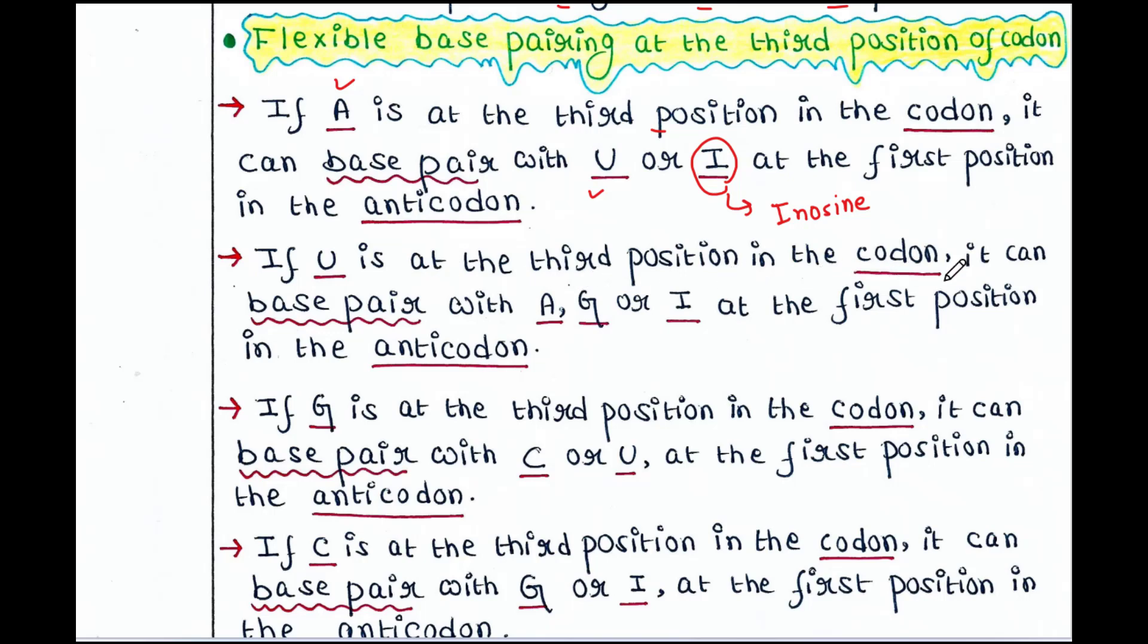Now, if U is at the third position in the codon, it can base pair with A, G or I at the first position in the anticodon. So, U pairs with A. This is usual base pairing. But U pairs with G or I. These two are unusual base pairing. That means wobble base pairing.